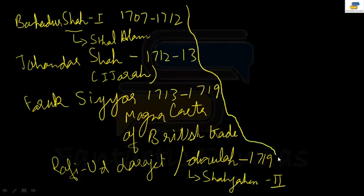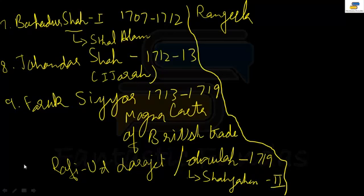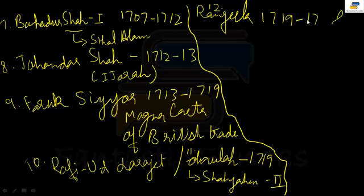The next king is Muhammad Shah Rangila. To put numbers: Babar, Humayun, Akbar, Jahangir, Shah Jahan, and Aurangzeb make 6. Bahadur Shah I is 7, then 8, Farrukhsiyar is 9, Rafi-ud-Darajat and Rafi-ud-Dawla make 10 and 11, and number 12 is Rangila.